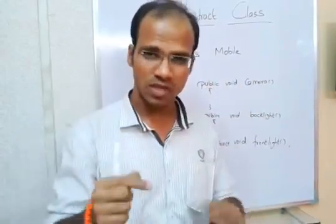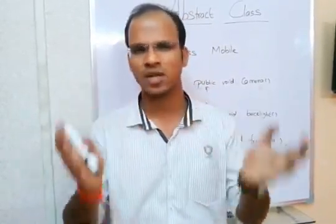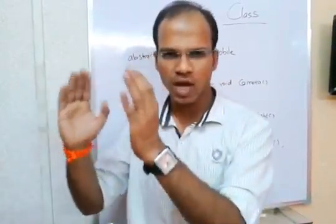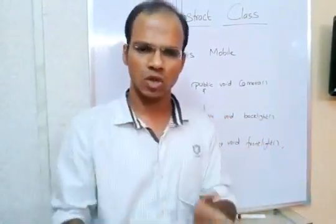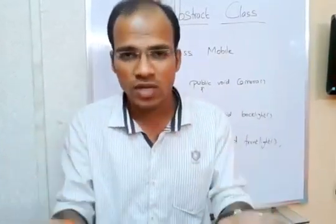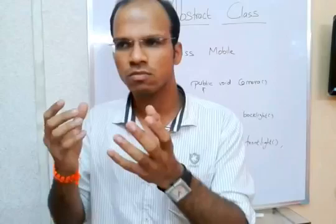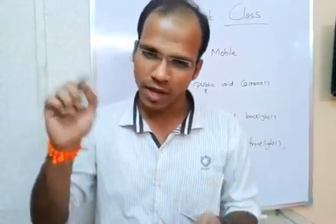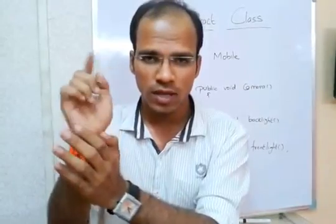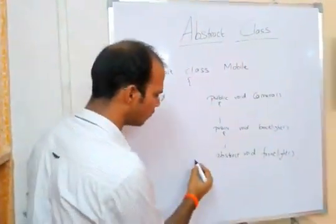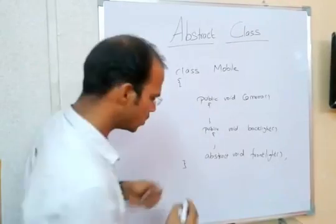A method which is only declared and not defined is called an abstract method. A class which has at least one abstract method is called an abstract class. A key feature is that you cannot create an object of an abstract class. If you're making a mobile phone object, you know there should be a front light but don't know what it does — so there's no complete logic, and you cannot instantiate this class.